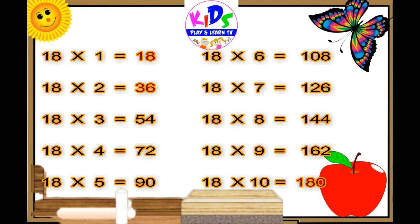18 sixes are 108, 18 sixes are 108. 18 sevens are 126, 18 sevens are 126. 18 eights are 144, 18 eights are 144. 18 nines are 162, 18 nines are 162. Eighteen tens are 180, eighteen tens are 180.